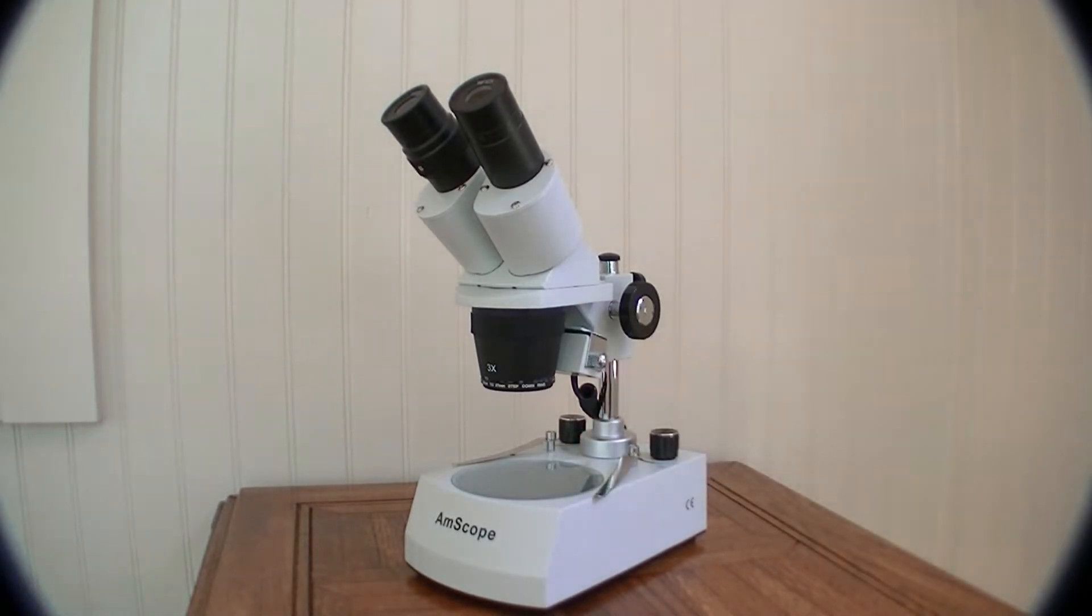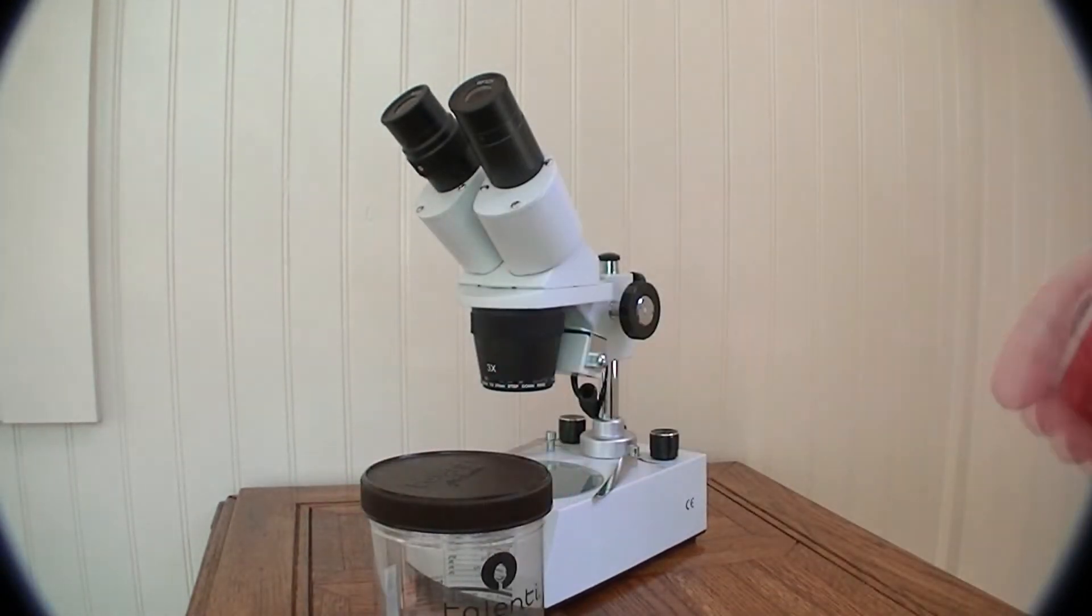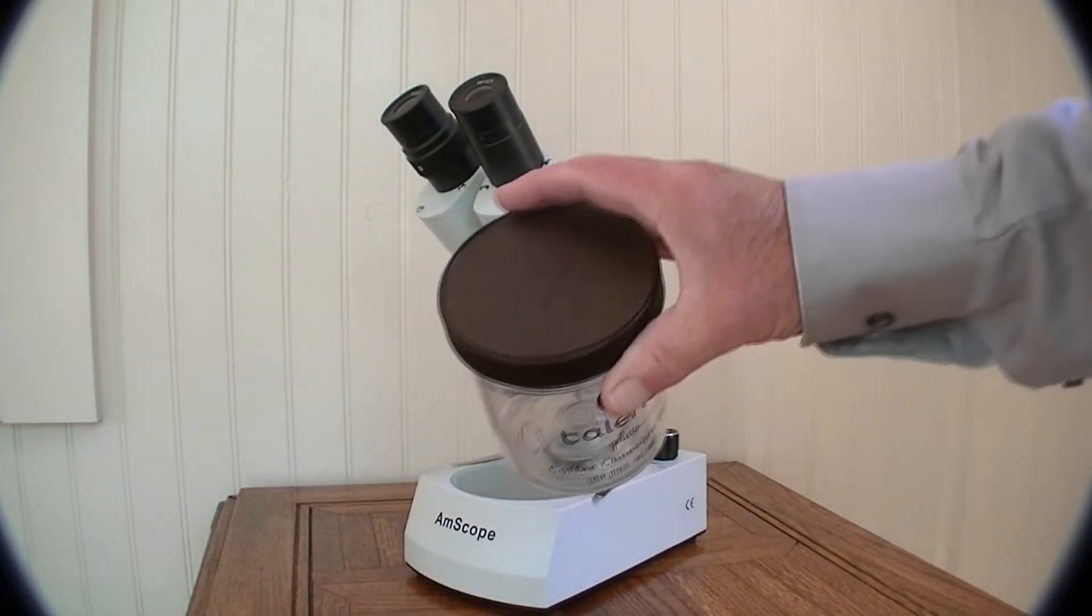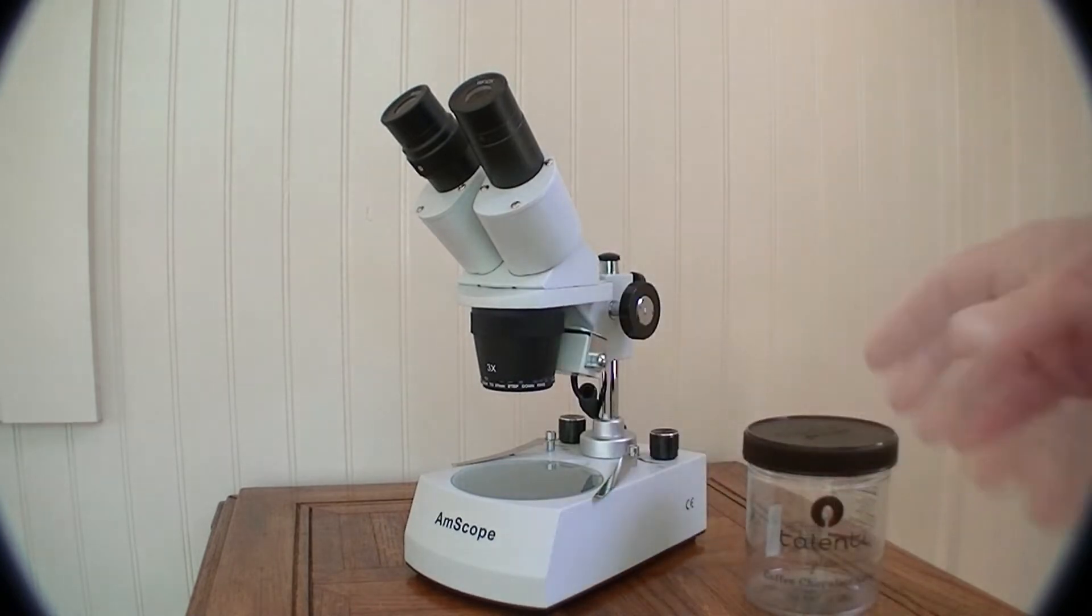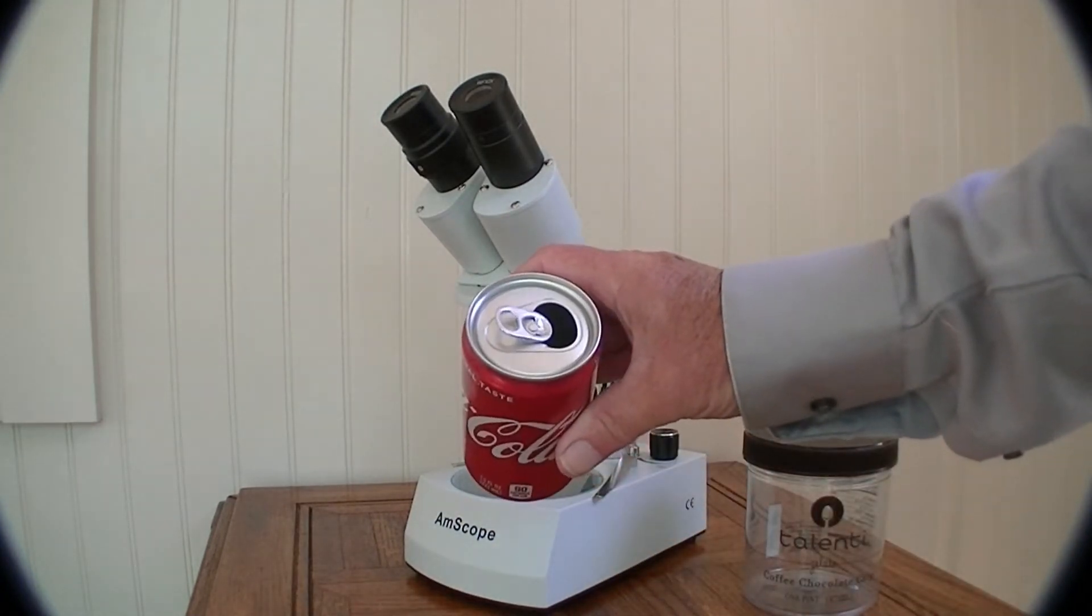That can be fairly straightforward. All you need is a jar like Talenti ice cream that's got a lid that's 95mm diameter and a Coke can that's got a nice reflective internal surface.